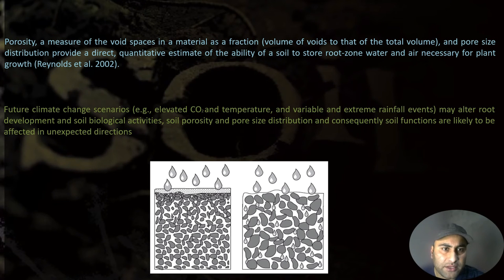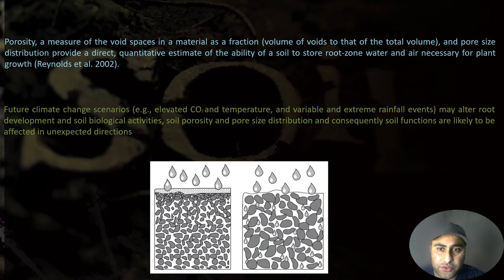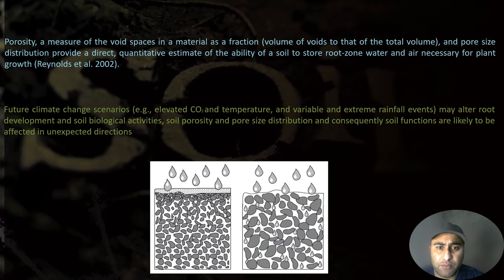Porosity is a measure of the void space in a material as a fraction of the total volume — essentially the vacant air space in the soil. Pore size distribution provides a direct quantitative estimate of the availability of soil to store root-zone water and air necessary for plant growth. Future climate scenarios involving elevated CO2, temperature, and variable extreme rainfall events may alter root-zone development and biological activities, affecting soil porosity, pore size distribution, and consequently soil functions in unexpected directions.